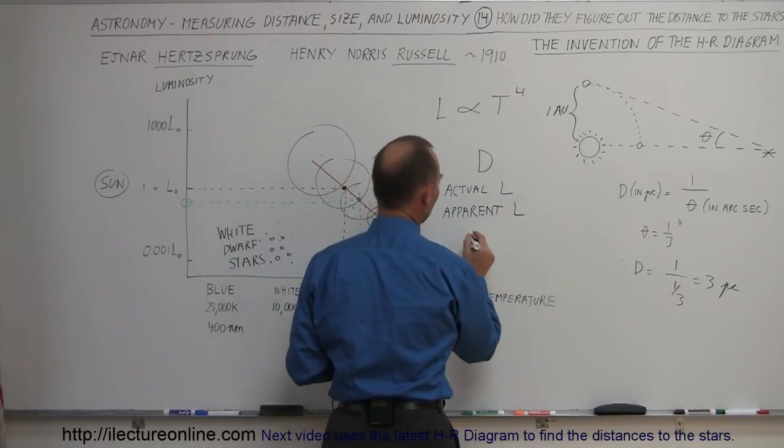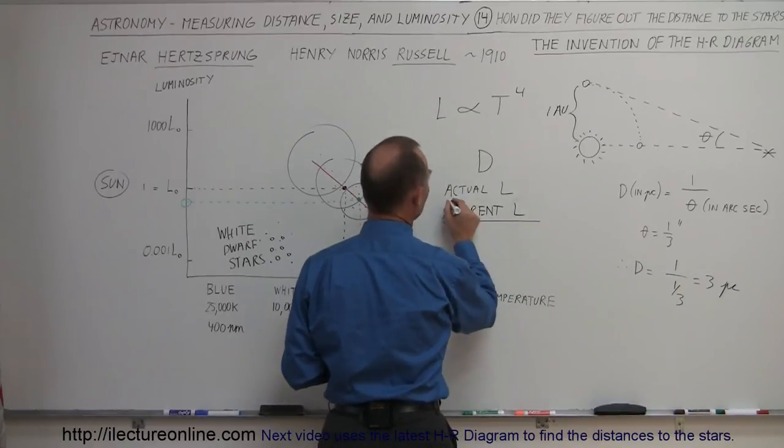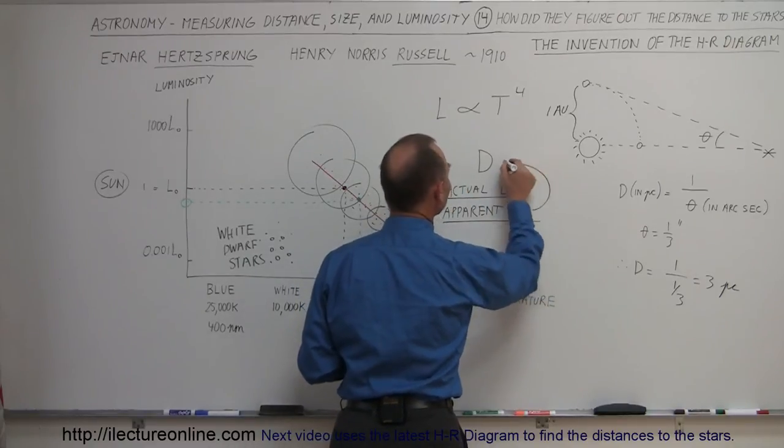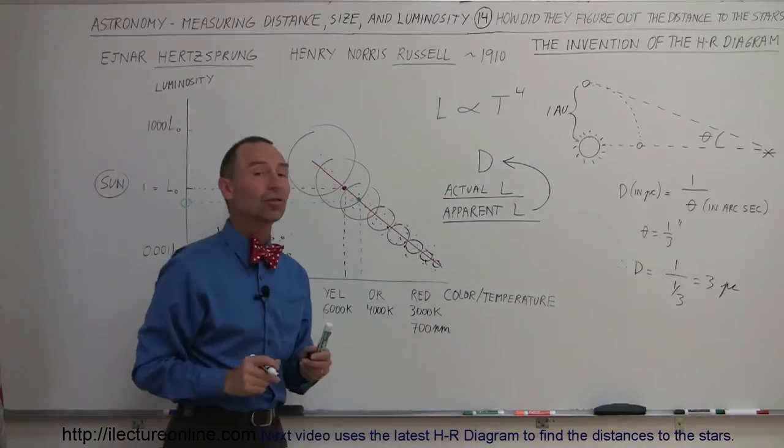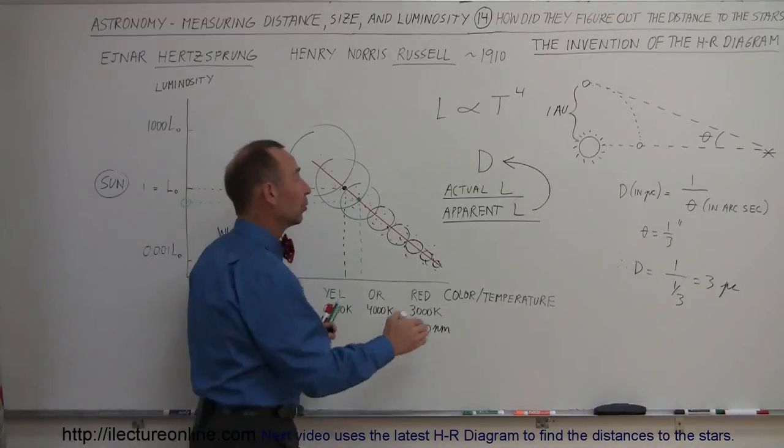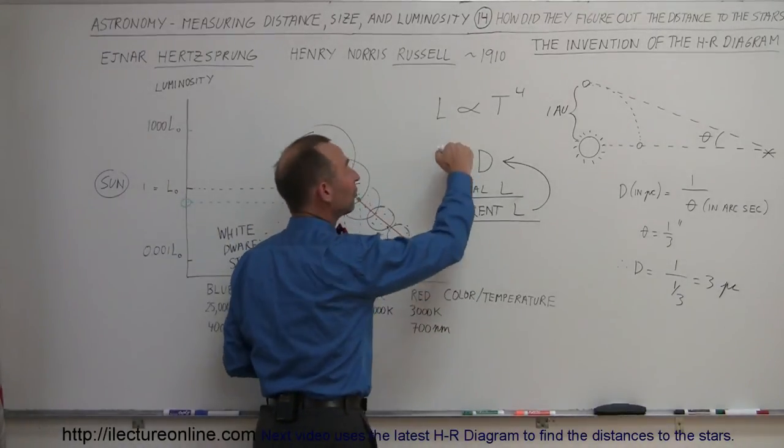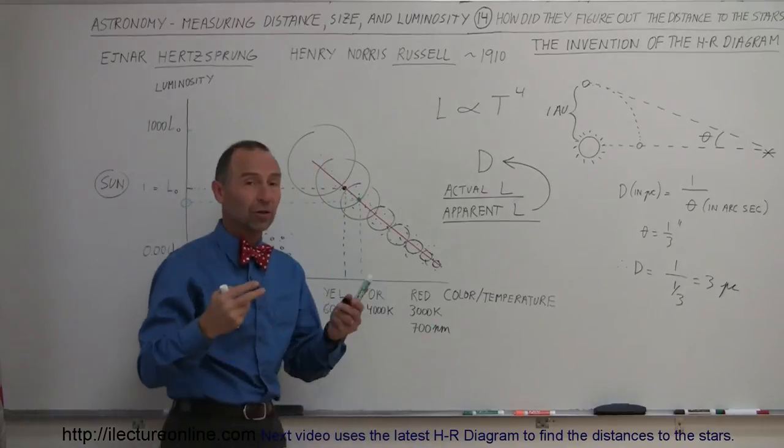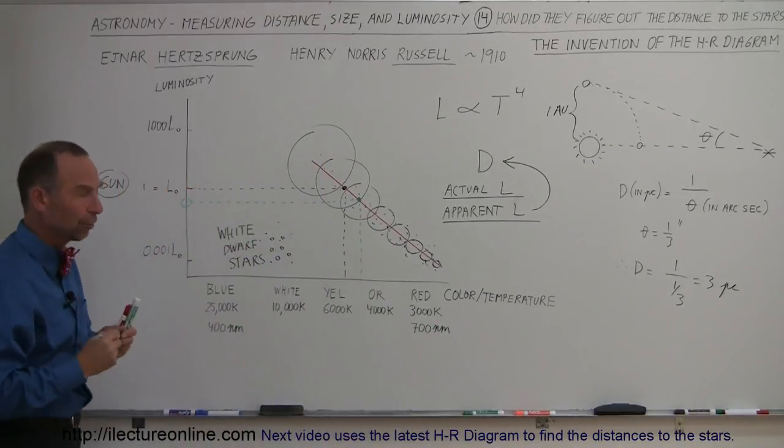So if you know the apparent luminosity, you know the actual luminosity, you can calculate the distance to the star. Or if you know the apparent luminosity and the distance, you can figure out the actual luminosity. As long as you know two items, you can always calculate the third.